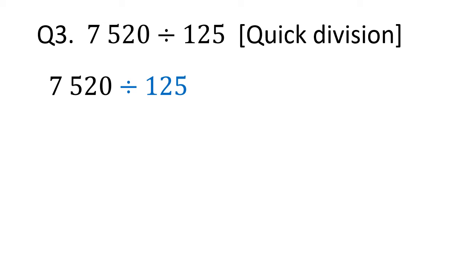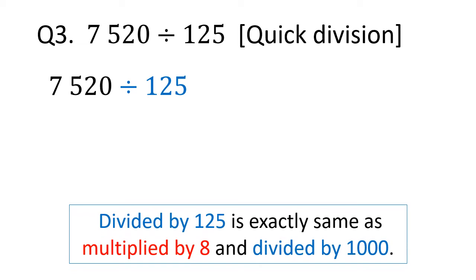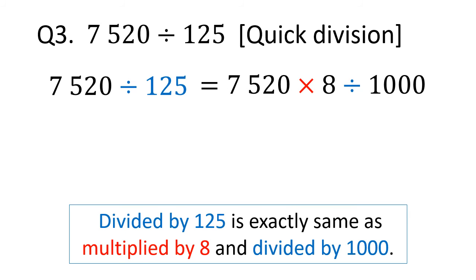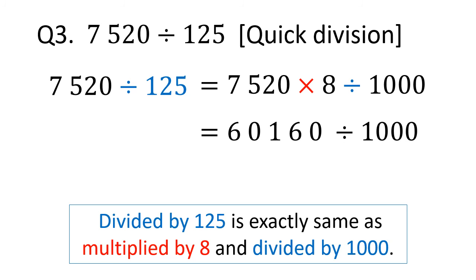Let's see the last question: 7520 divided by 125. Again, divided by 125 is exactly the same as multiplying by 8 and then dividing by 1000. So 7520 divided by 125 becomes 7520 times 8, which is 60,160, and then we divide by 1000. Dividing by 1000 means moving the decimal point 3 places to the left, and we place the decimal point at the right end of 60,160.